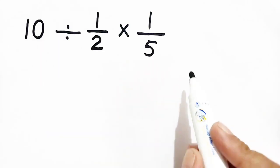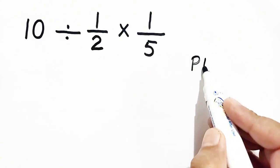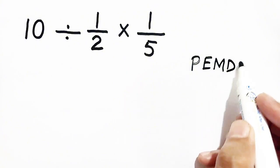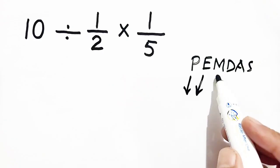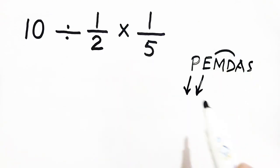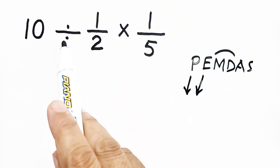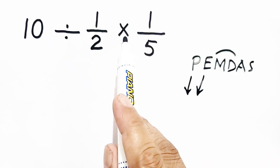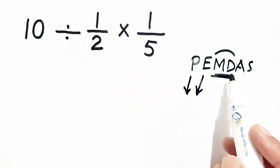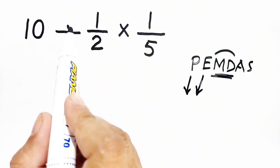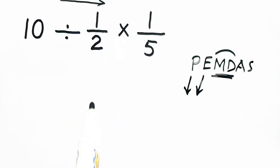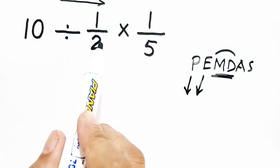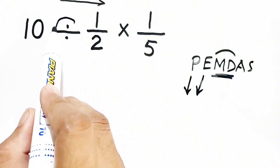If we see it, we have to use MDAS principle. Parentheses is not included, exponent is not included. So multiplication and division — this is division and this is multiplication. Division is at the left side, multiplication is at the right side. Both have the same priority, so we will solve first the operation which is at left, starting from left to right.